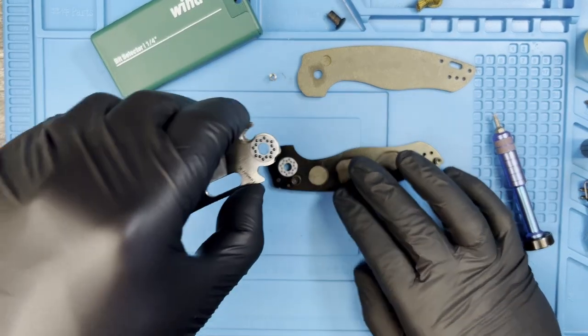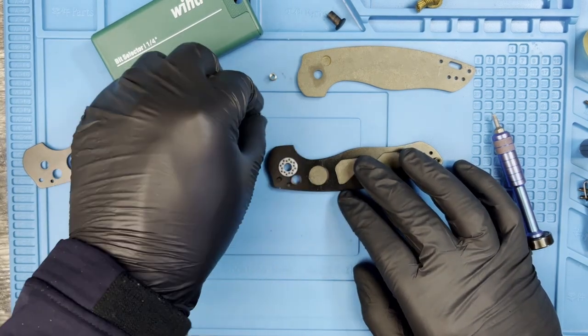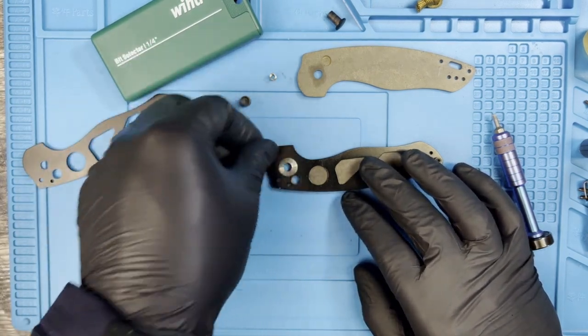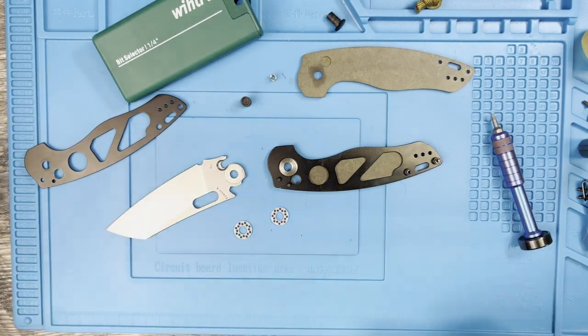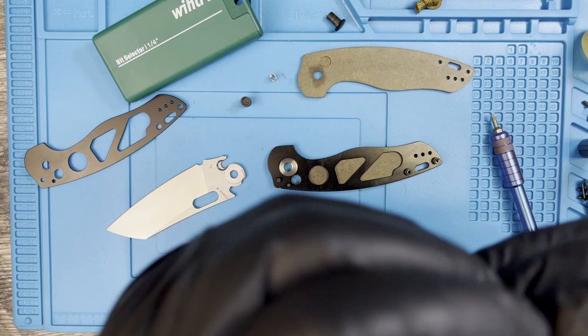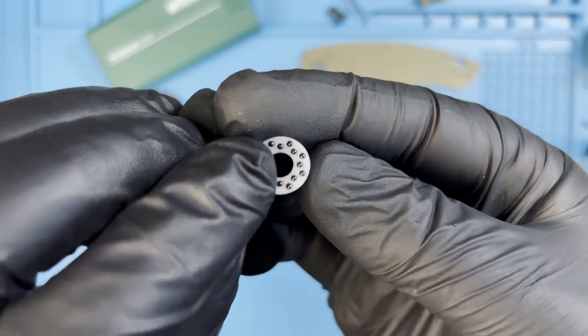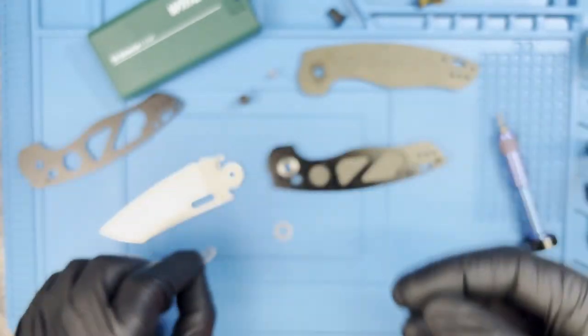You can go ahead and remove your skeletonized scale and set it to the side. Multi row bearings. Would you look at that? That is awesome. That is really, really awesome. I'm going to move everything out of the way. Won't matter which way you face them. They're the same depth on these type of bearings. It will not matter.